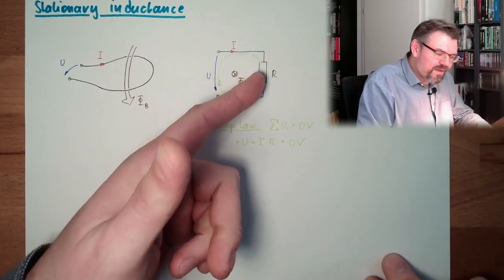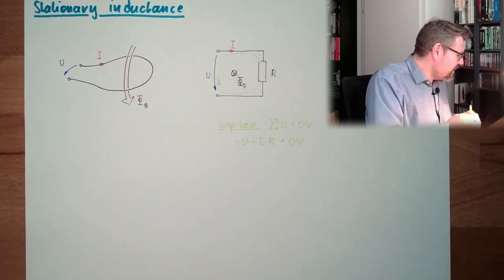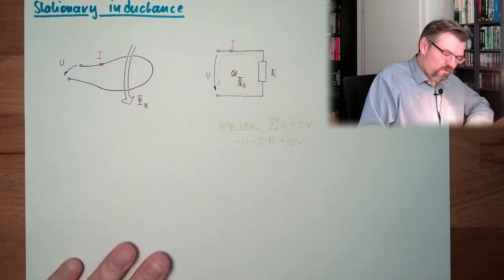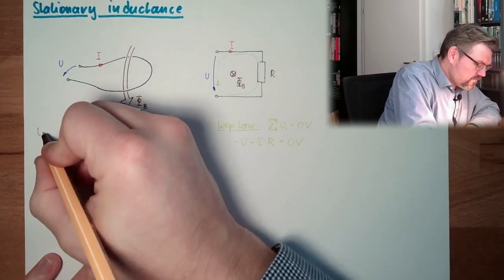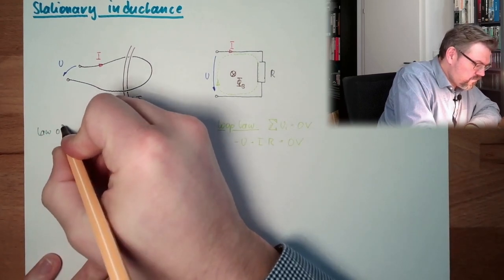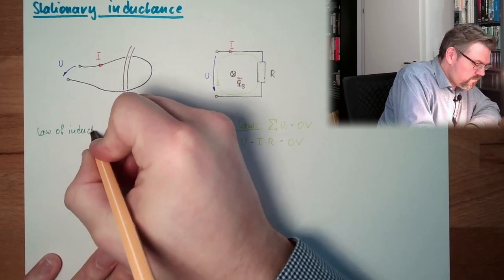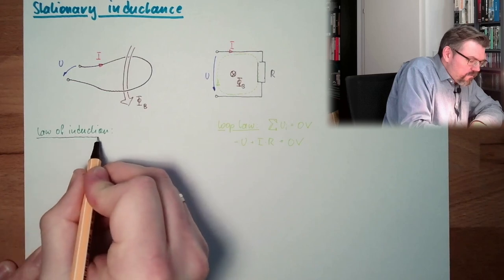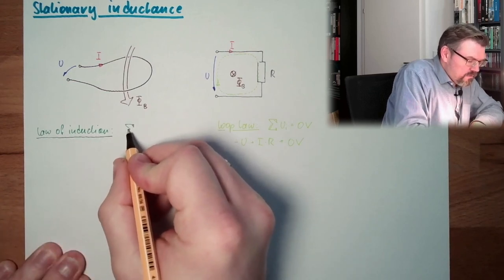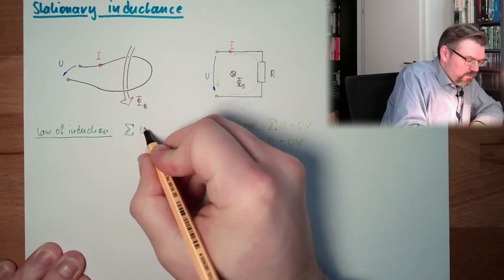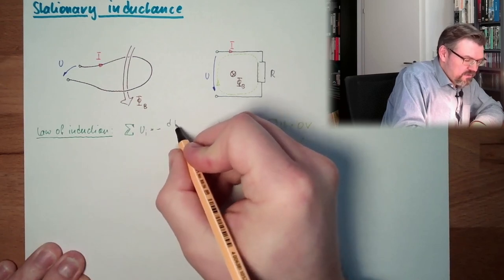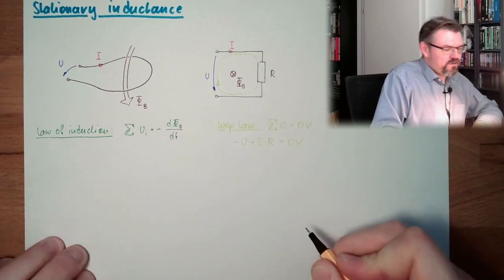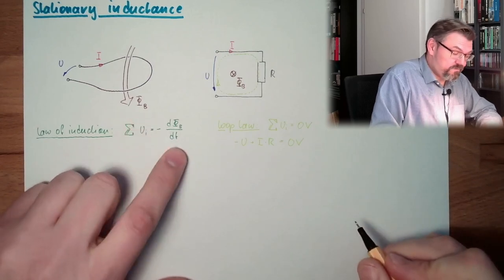Now, you should not forget this R of the loop. This is the law of induction. Sum of all UI equals minus the change rate, the negative change rate of the flux linkage.